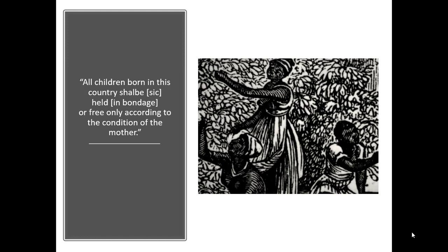In English law, a child's status was always derived from the father — it's a male-dominant society. But here in America, they changed it to the mother. Why would they do that? It's unusual to change a law that had been in use for years, especially as a new colony with all the challenges in the world. You'd think survival, finding food and water is more important. So what about being in America made the English change this law from the father to the mother?